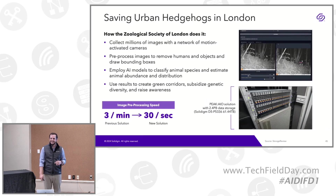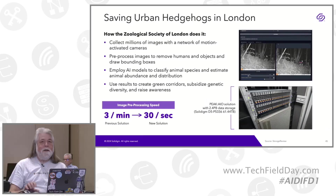Audience Q&A: One attendee jokes about heating a tropical fish exhibit with the chiller waste heat. Another asks whether they're doing individual animal recognition to track hedgehogs over time. Answer: Today it's about population assessment — not identifying individuals or tracking habits over time. The goal is understanding on a mass scale how many animals are in the population and where they are, to make strategic conservation choices.